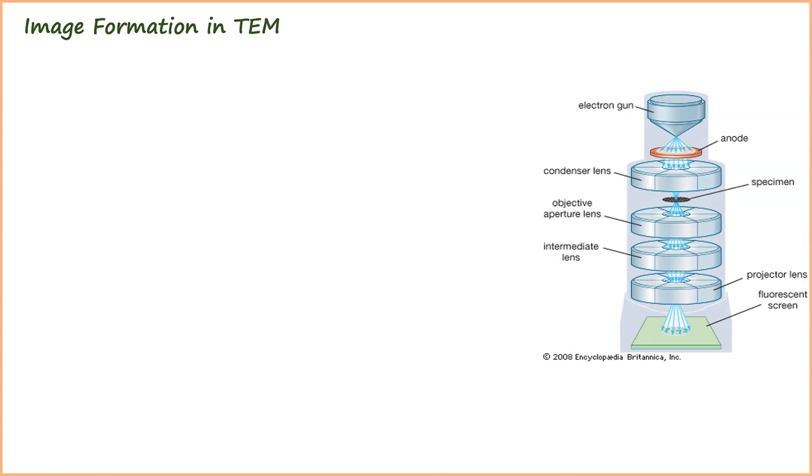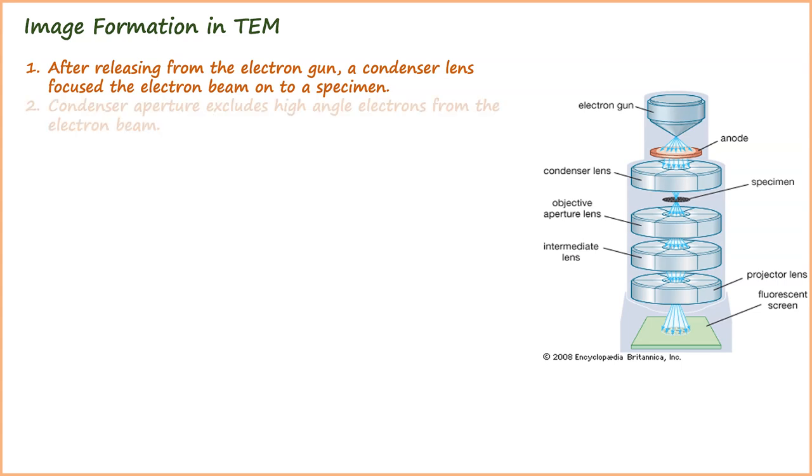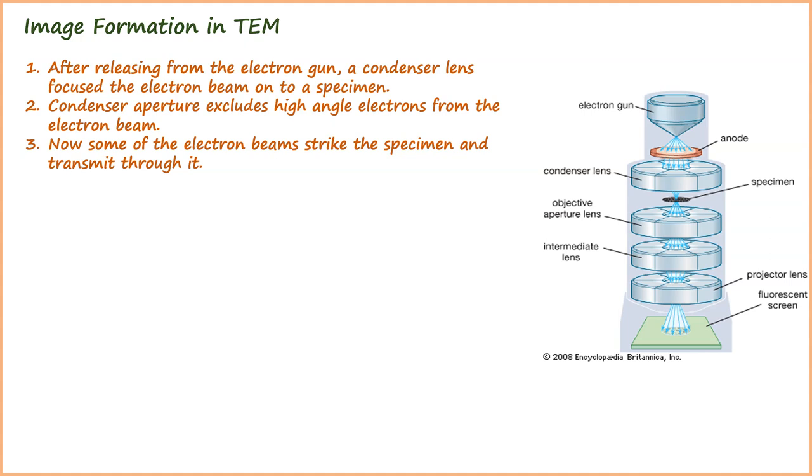Now we will discuss image formation in transmission electron microscope. After releasing from the electron gun, a condenser lens focuses the electron beam onto a specimen. Condenser aperture excludes high-angle electrons from the electron beam. Now some of the electron beams strike the specimen and transmit through it.